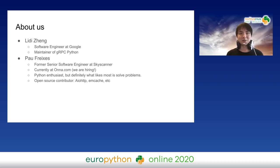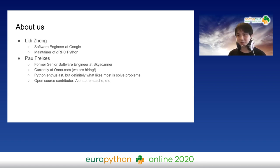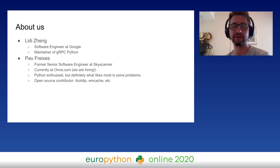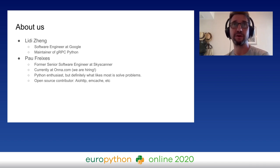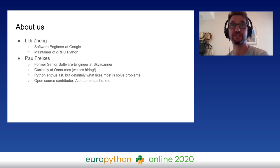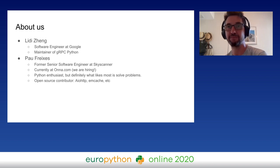Please allow us to introduce ourselves again. This is Lily Zheng and I'm a software engineer at Google. I have been a maintainer of gRPC Python since 2018. First of all, I wanted to provide great thanks to Skyscanner for funding my time working on the project the last year. Sadly, I'm no longer a member of the Skyscanner family. I'm currently working at hona.com. I'm a Python enthusiast, but what I like more is solving any kind of engineering problem, and I've been contributing to many different open source projects.